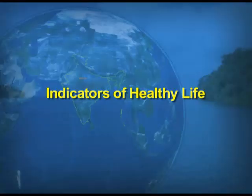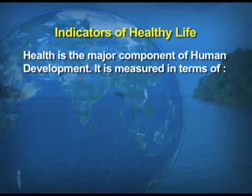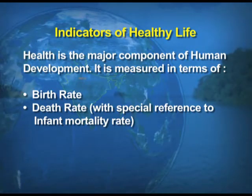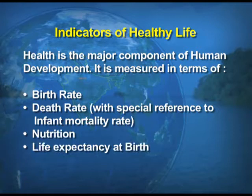Now we talk about the indicators of a healthy life, because health is one of the major indicators and a major component of human development. It is measured in terms of: number one, birth rate; number two, death rate — with special reference to infant mortality rate; number three, nutrition; and number four, life expectancy at birth.